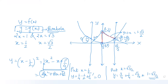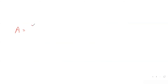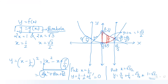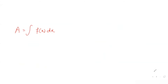Now I can see the common region between the two vertical lines. I'll use a vertical strip to find the area, since each vertical strip goes from the parabola up to the straight line. The area integral has limits from x = 1/2 to x = √3/2.